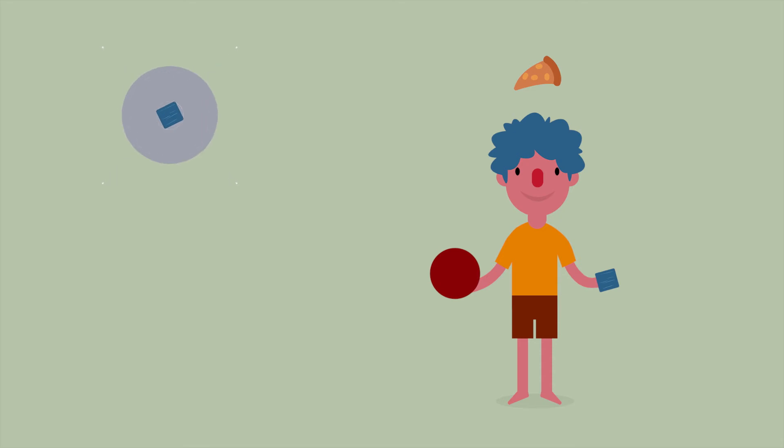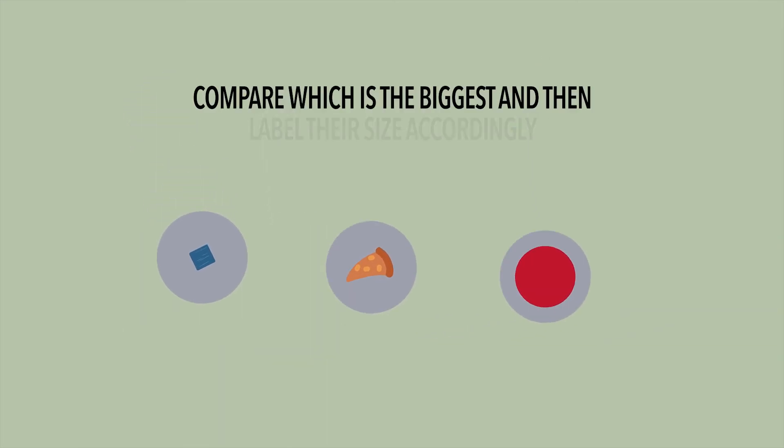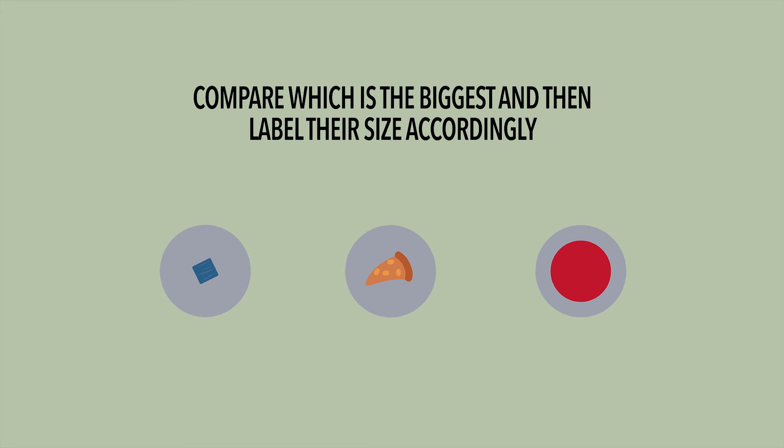The blue block of wood is small. The orange pizza is medium, while this red ball is large. How did we arrange them? By comparing which of the three is biggest, and then labeling them accordingly.